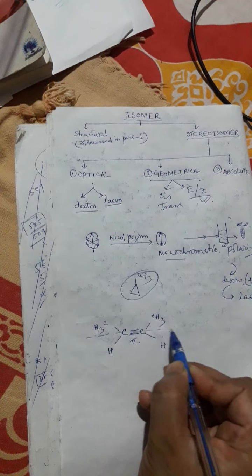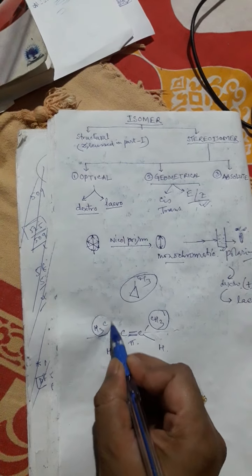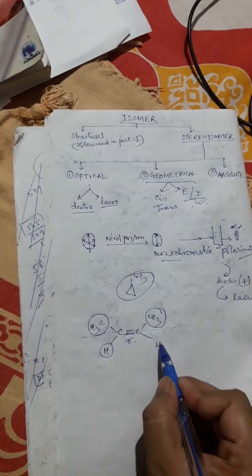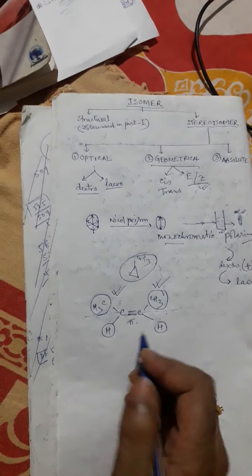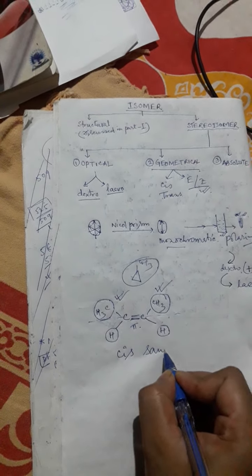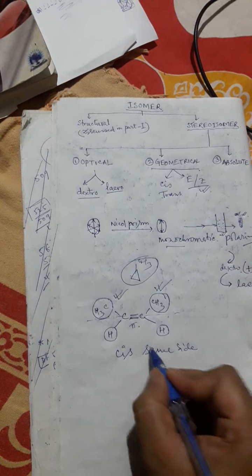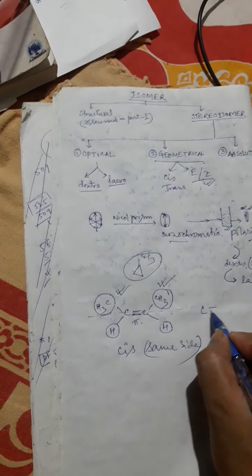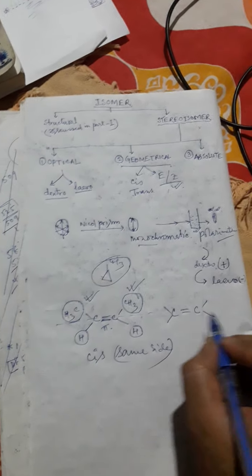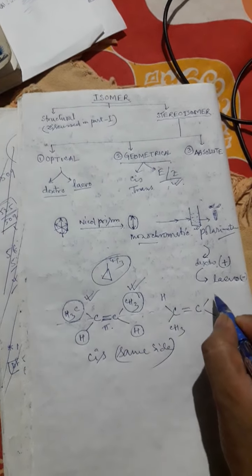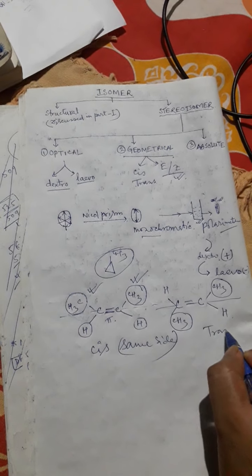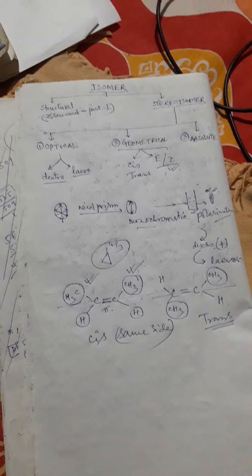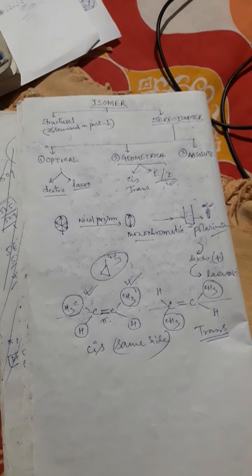Consider a plane through this double bond. There is a bulkier group and a non-bulkier group. If the two bulkier groups are present on the same side of the plane, it is called cis — cis means same side. For trans, the bulkier groups are present on the opposite side of the plane; for example, CH3 on one side and CH3 on the other side. Trans means opposite.